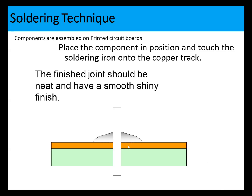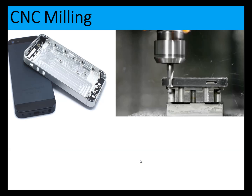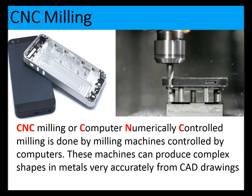The finished solder joint should be neat with a smooth shiny finish. For CNC milling, phone cases can be seen with visible tool paths where they have been CNC milled. CNC milling - computer numerically controlled milling - uses milling machines controlled by computers. These machines can produce complex shapes in metals very accurately from CAD drawings.